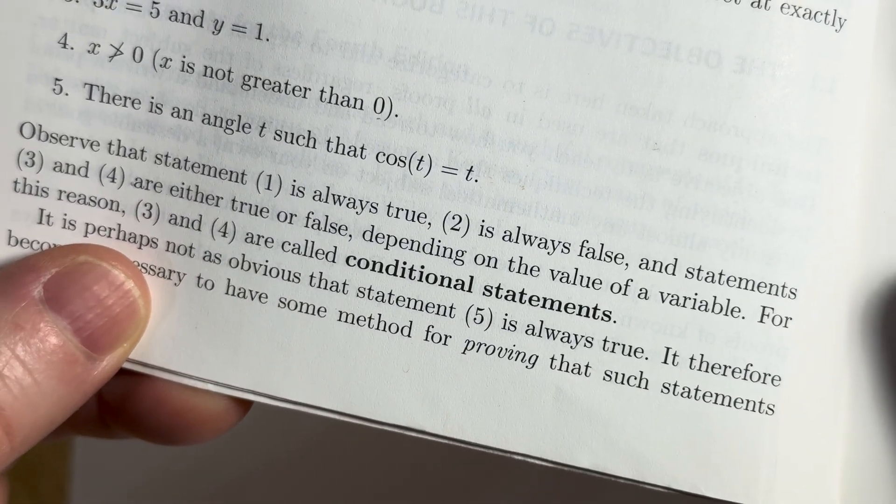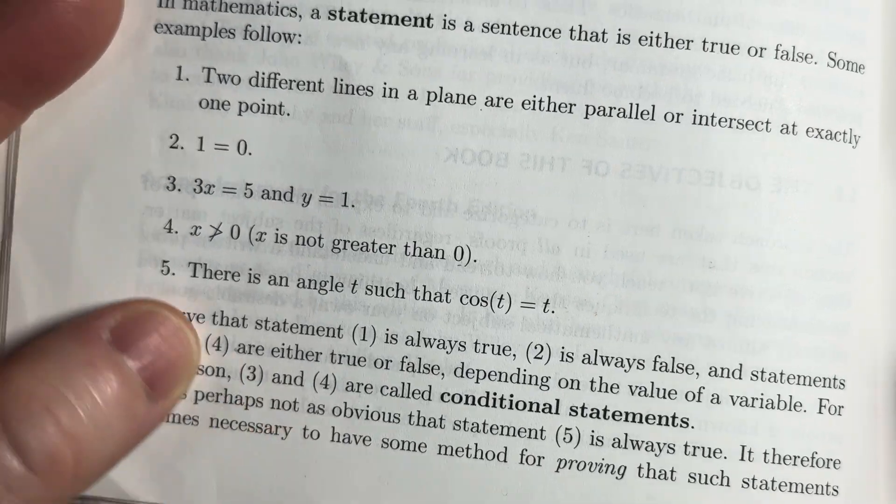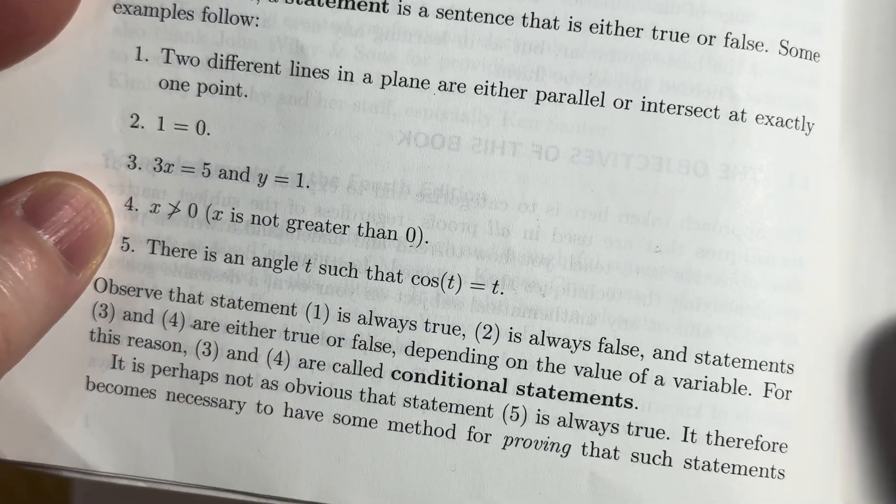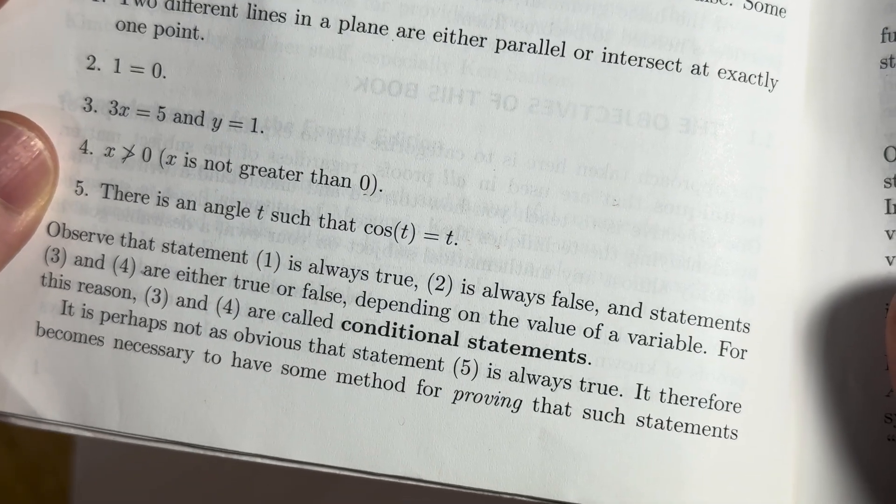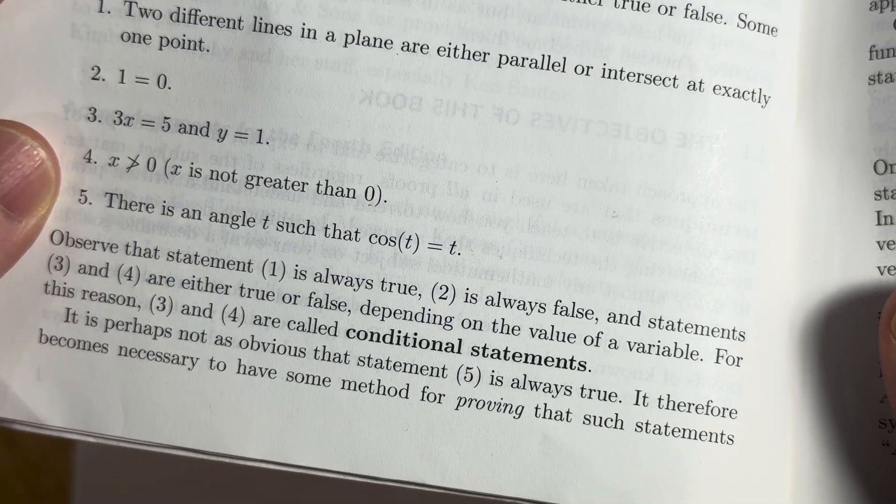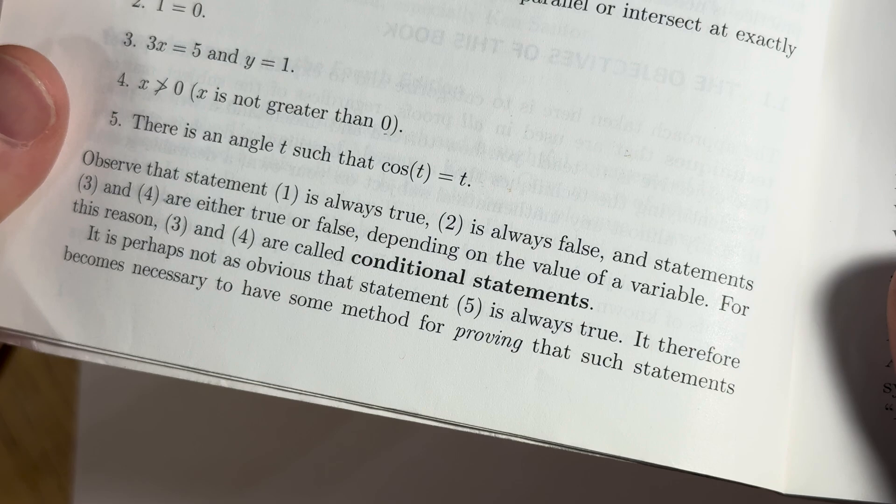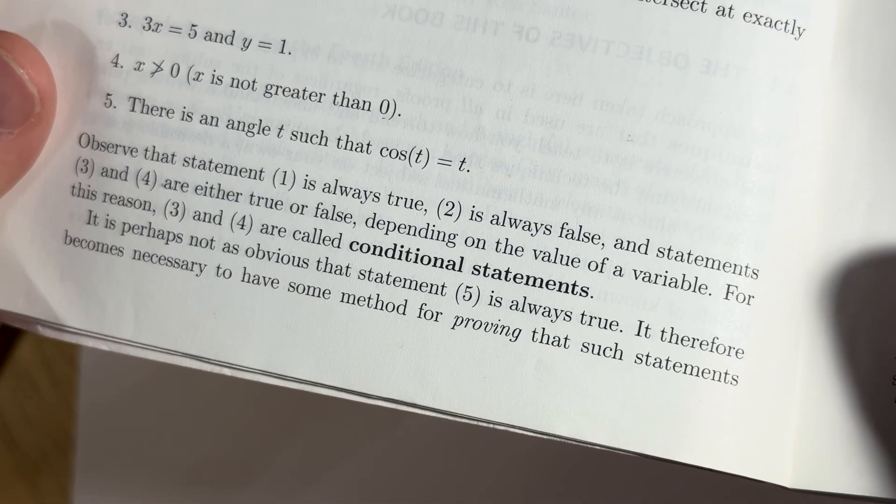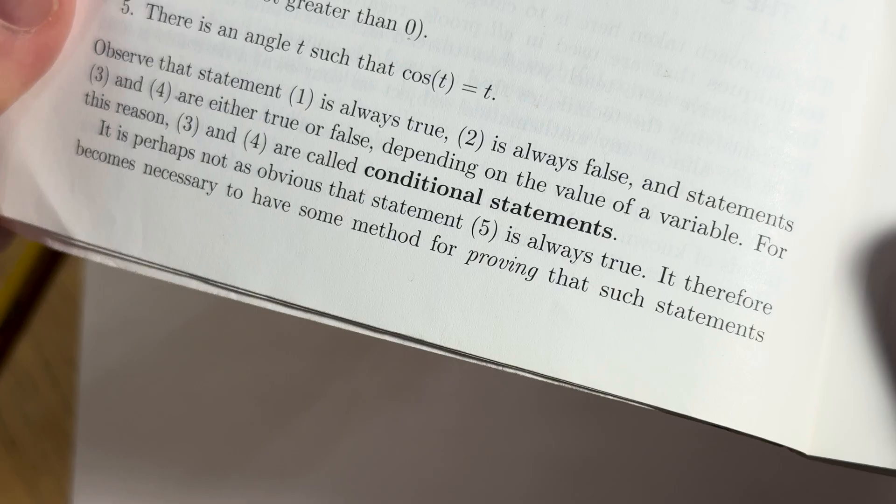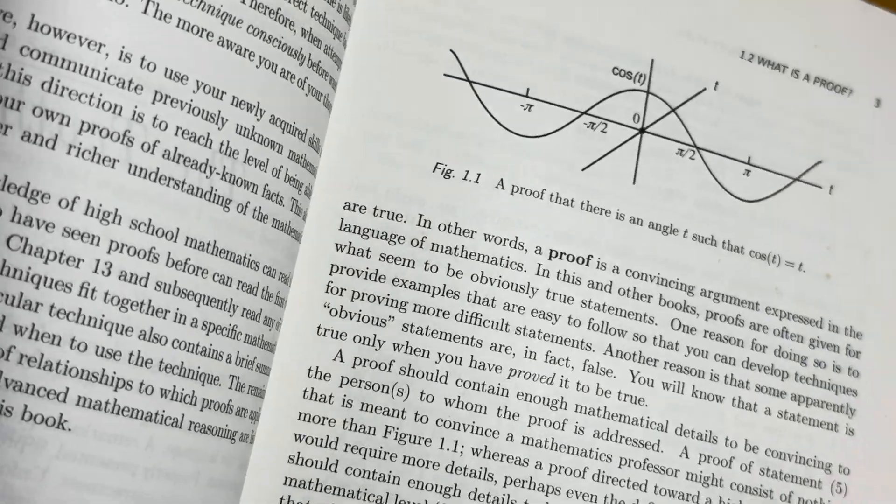Observe that statement one is always true. Two is always false. And statements three and four are neither true or false. Because depending on the value of the variable. For this reason, three and four are called conditional statements. It is perhaps not obvious that statement five is always true. It is true. It therefore becomes necessary to have some method for proving such statements are true.